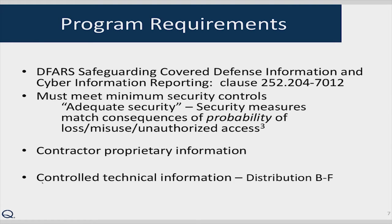The program requirements listed in DFARS Clause 252.204-7012 state that contractors must meet minimum security controls to provide adequate security — defined as measures matching the consequences of the probability of loss, misuse, or unauthorized access to information. This includes contractor proprietary information that identifies the contractor directly or indirectly, including program descriptions, facility locations, PII or personally identifiable information, as well as trade secrets, commercial or financial information, and other commercially sensitive information not customarily shared outside the company.